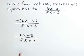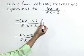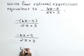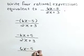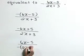As a third equivalent form, let's apply the negative sign of our original rational expression to the denominator, giving 6x minus 5 over, in the denominator, the negative of 2x plus 3.